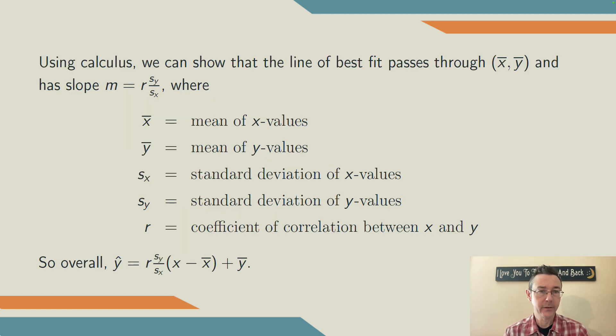We can find the equation of the least squares regression line using calculus, although I'm not going to do that here. It turns out that that line always passes through the point (x̄, ȳ), where x̄ and ȳ are the means of the x values and the y values, respectively.